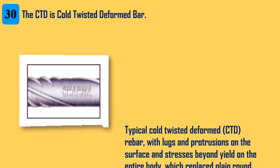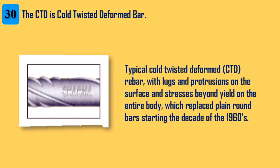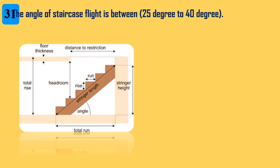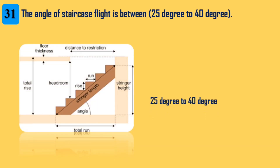30. CTD is cold twisted deformed bar. Typical cold twisted deformed (CTD) rebar has lugs and protrusions on the surface and stresses beyond yield on the entire body, which replaced plain round bars starting in the decade of the 1960s. 31. The angle of a staircase flight is between 25 degrees to 40 degrees.